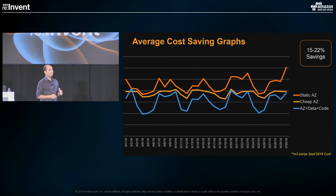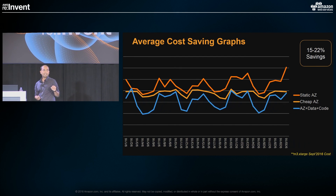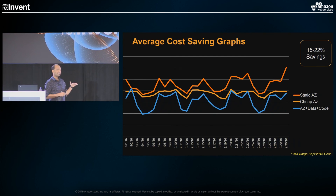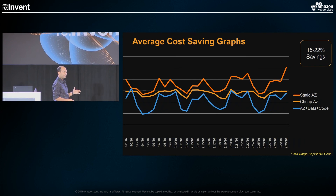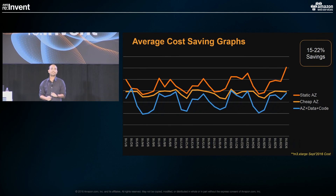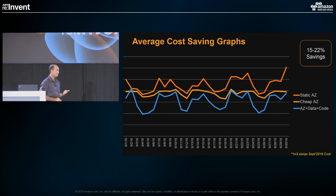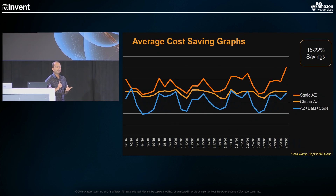The next step was the implementation of optimal cluster size. By doing that, we found an average saving of around 18 to 19% depending on the project, since the data volume and complexity differ across projects. The takeaway for cost savings: find the optimal cluster size and launch your cluster in the optimal availability zone.